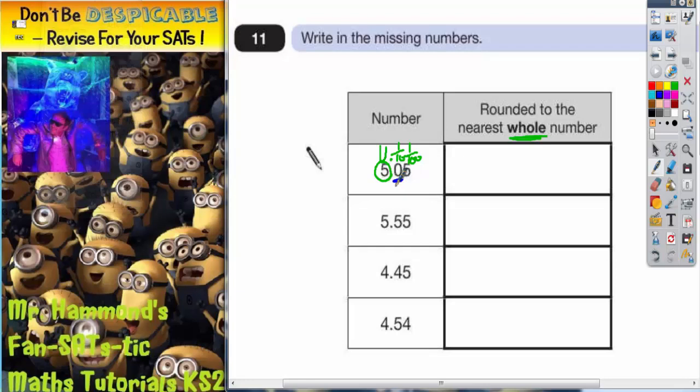So in this case we're going to look at the number in the tenths column to help us decide. When we're rounding, if this number is 5 or more we round up, but if it's less than 5 we stay the same. So here it's 0 which is less than 5, that means we're going to stay the same. So our answer is 5.